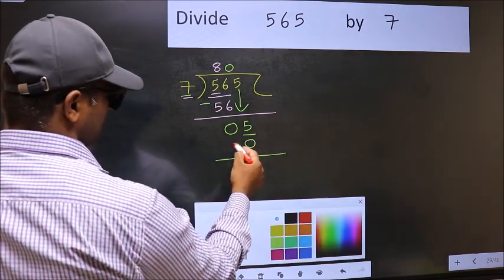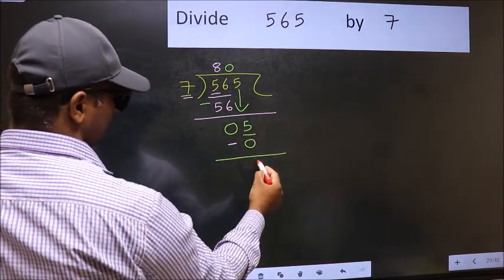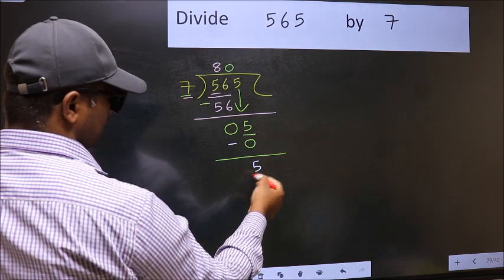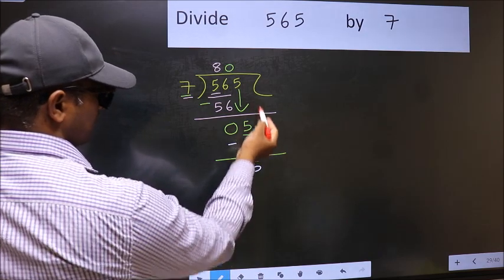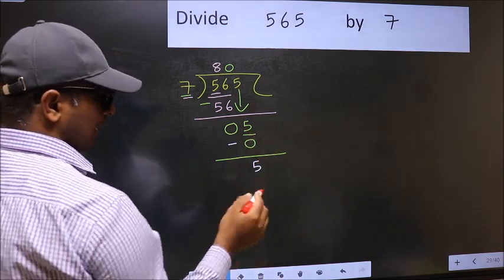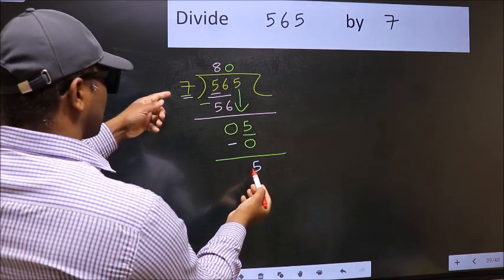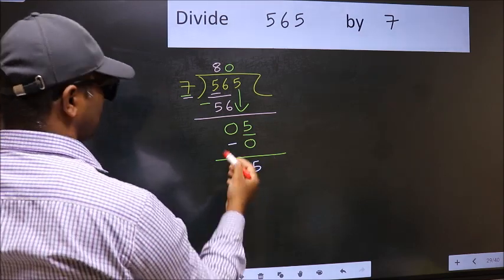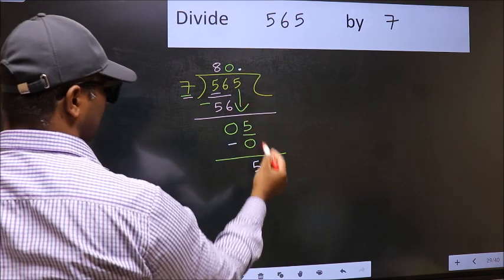Now you should subtract. 5 minus 0, 5. Over here, we did not bring any number down. And 5 is smaller than 7. So now you can put dot and take 0.